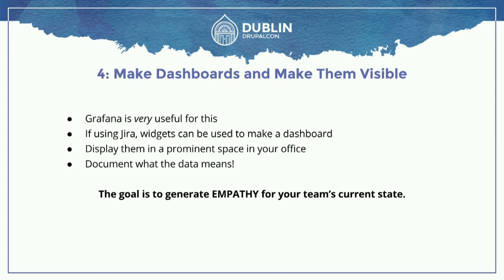Grafana is a very useful tool for this, especially if you're using the statsd/Graphite stack. If you're using Jira, you can create widgets for your dashboard and get some key team metrics there as well. Get a television and a little Raspberry Pi or whatever, and display this data in a prominent space of your office, right where people are walking by and can see it. Make sure you have some basic documentation or very clear description of what this data means. The goal, the reason you want to do this, is to generate empathy for your team's current state. Someone can walk by, look at your team's dashboard, and say, 'wow, they had a really tough day today — what type of work are they doing? How can I help?'